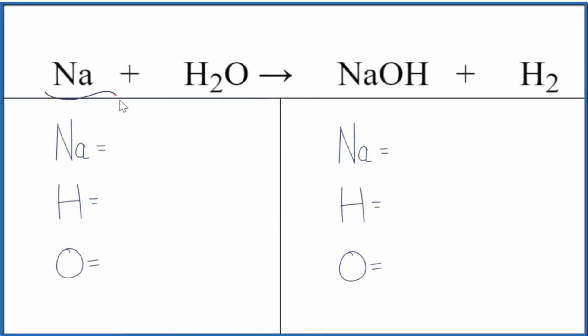Let's balance the equation Na plus H2O yields NaOH plus H2. This is sodium metal plus water. We get sodium hydroxide and hydrogen gas here. We'll also look at the type of reaction and write the states.